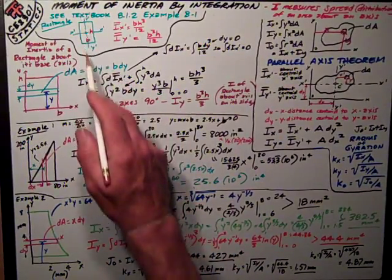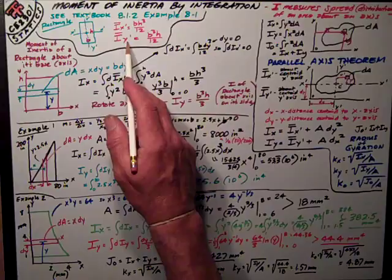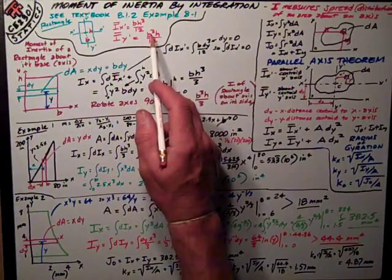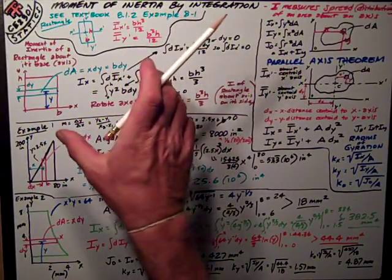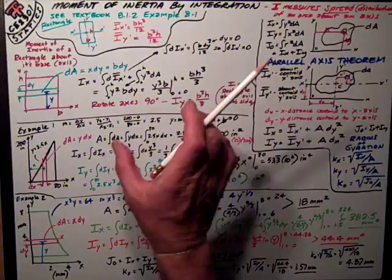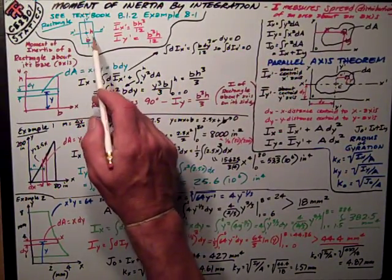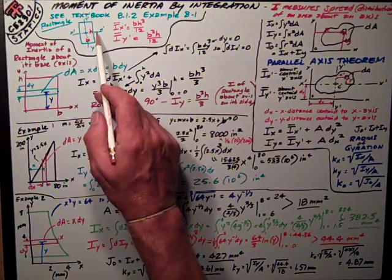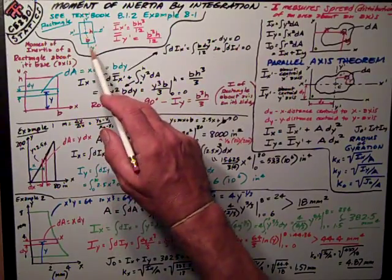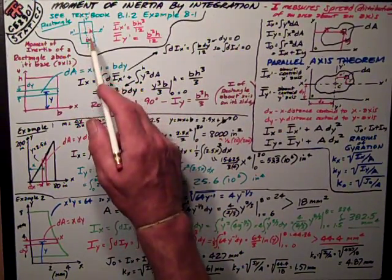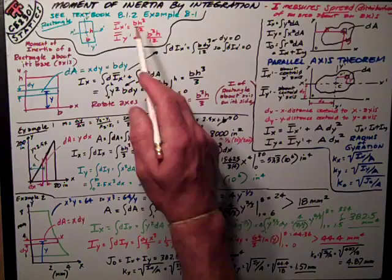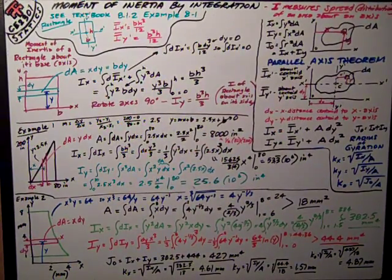Similarly, I have this y-prime axis passing through the centroid, and the moment of inertia about that, using these dimensions b and h, is b³h/12. Obviously if I turn the thing 90 degrees, it's really the same thing, where b is the width parallel to whatever axis it is. It's a very important formula to remember, bh³/12, and how it's applied.